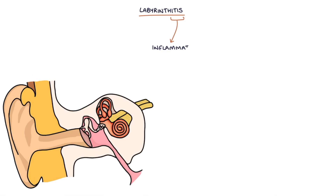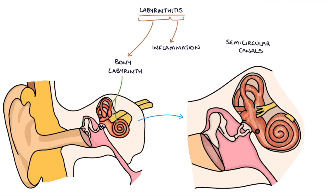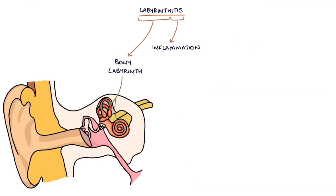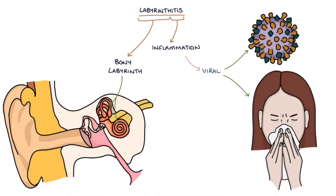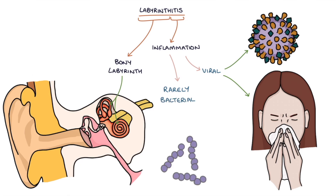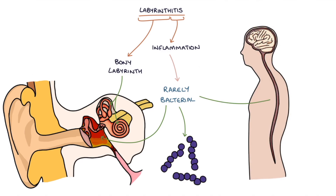Labyrinthitis refers to inflammation of the bony labyrinth of the inner ear, which includes the semicircular canals, vestibule — the middle section of the labyrinth — and the cochlea. The inflammation is usually attributed to a viral upper respiratory tract infection. Rarely, labyrinthitis can be caused by a bacterial infection, either as an inflammatory response to a nearby infection or the result of bacteria or bacterial toxins entering the labyrinth itself. It's usually secondary to otitis media or meningitis.